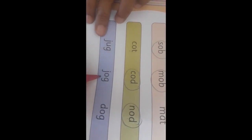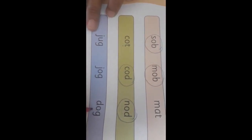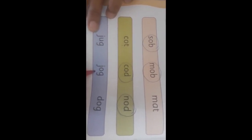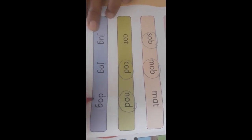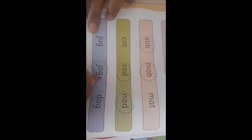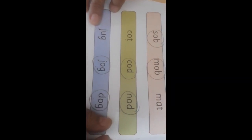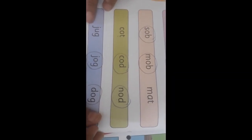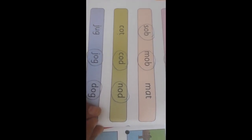Now here jug, jog, dog. Now tell me jug and jog, can you see the similar sound in that? No. Now jog and dog, can you see similar sound? Yes. Jog and dog are rhyming words, so we are going to circle jog and dog. So this way you are going to complete your home fun activity in English.